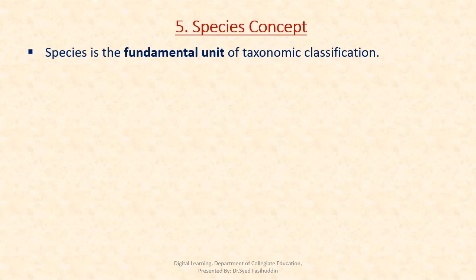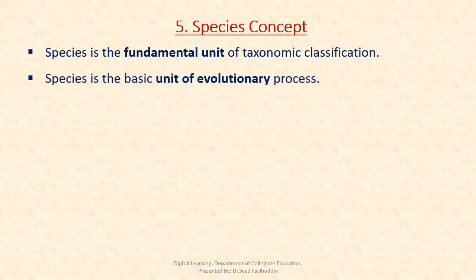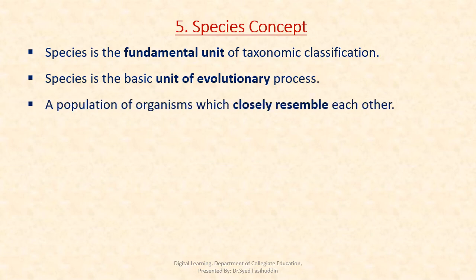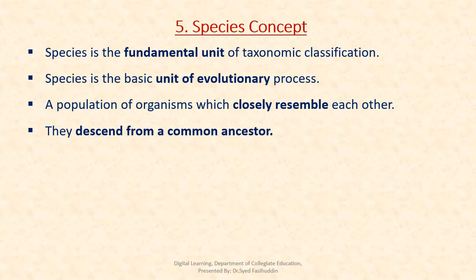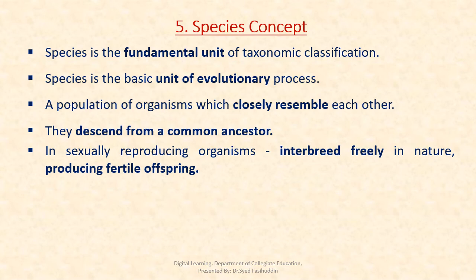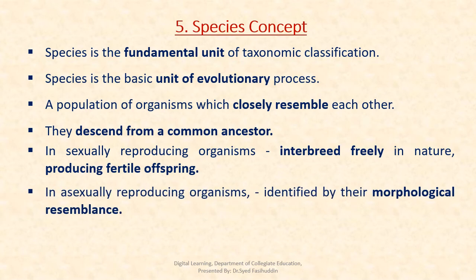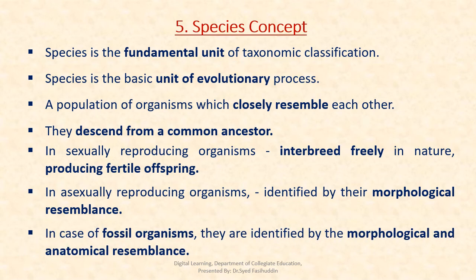The species concept: species is considered the fundamental unit of taxonomic classification and the basic unit of the evolutionary process. A population of organisms closely resembles each other, descending from a common ancestor. In sexually reproducing organisms they interbreed freely in nature producing fertile offspring. In asexually reproducing organisms they are identified by morphological similarities. In fossil organisms they are identified by their morphological and anatomical similarities.